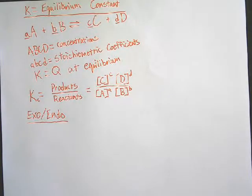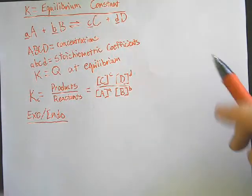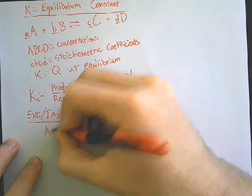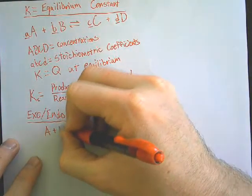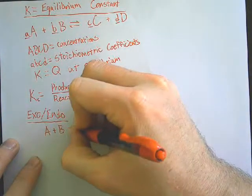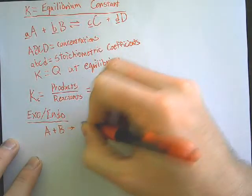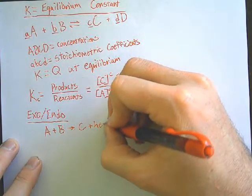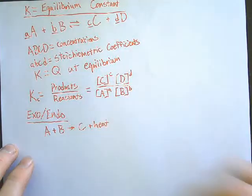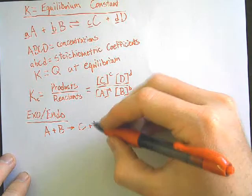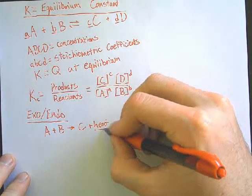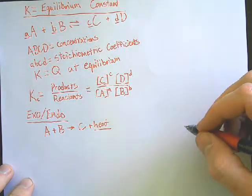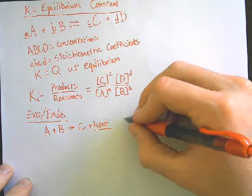Here's an example. Sometimes we see it written as: A plus B goes to C, plus heat on the product side. And so if it has heat on this side, that means it's exothermic.